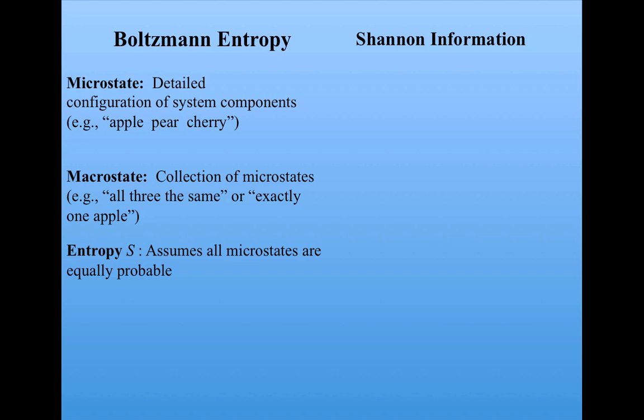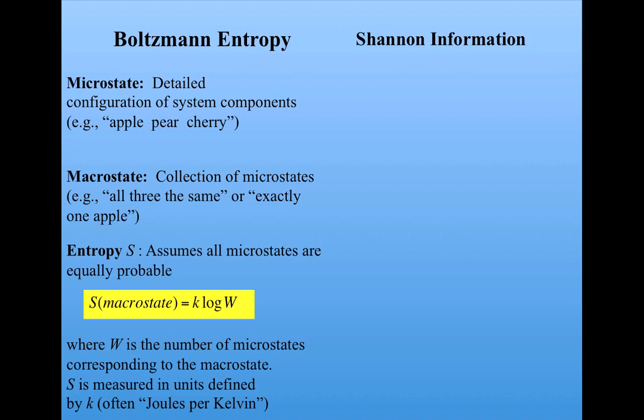And the entropy, S, assumes that all microstates are equally probable. Here was the equation engraved on Boltzmann's tomb, that said the entropy of a particular macrostate was equal to k, Boltzmann's constant, times the log of W. This log, he used this to mean the natural log. And W was the number of microstates corresponding to this macrostate. K just gave us a way of assigning units, measured often in joules per kelvin. But for our purposes, we can assume that k is equal to 1.